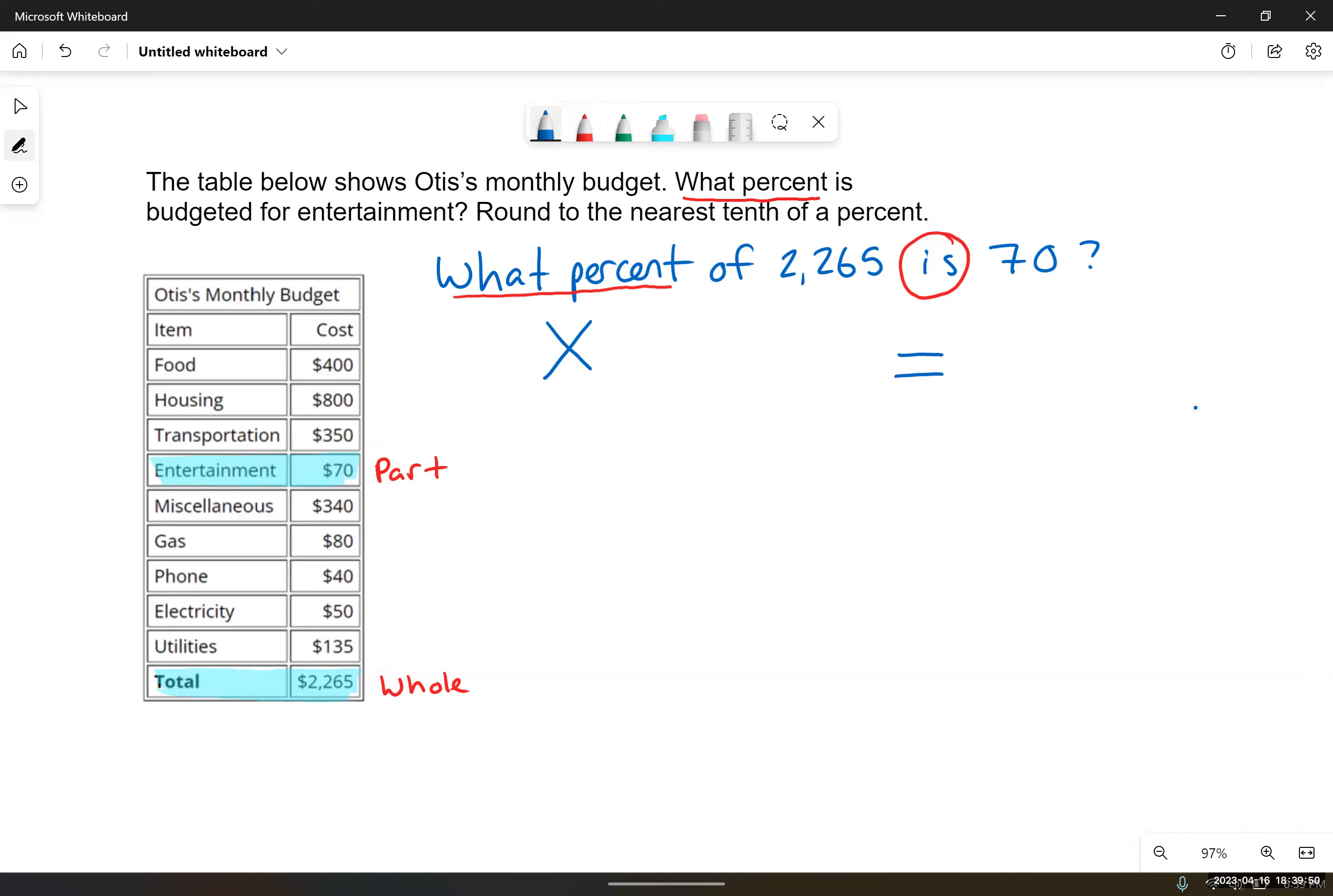I always use X, just my choice. You don't have to use X, you can use any symbol you want. So I'm going to use X to stand for that unknown percent. What percent of $2,265? Of followed by a number means multiplication. So X times 2,265 equals 70.